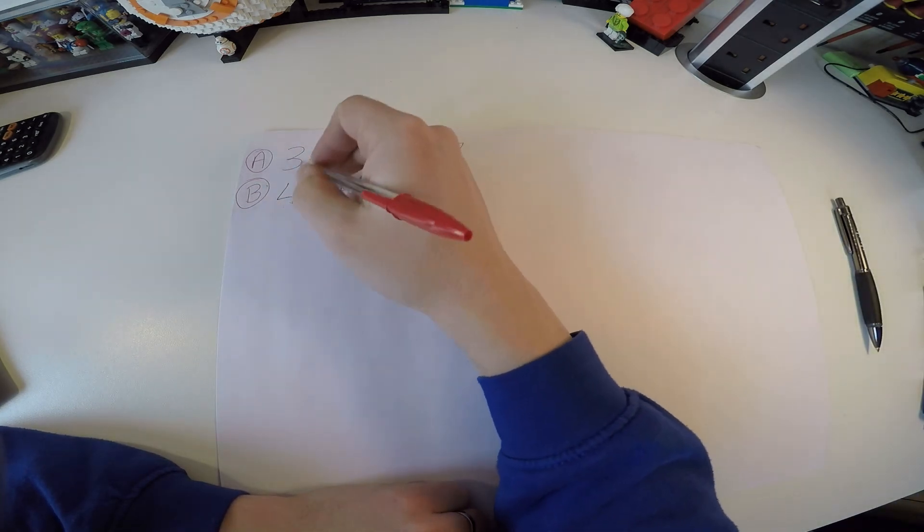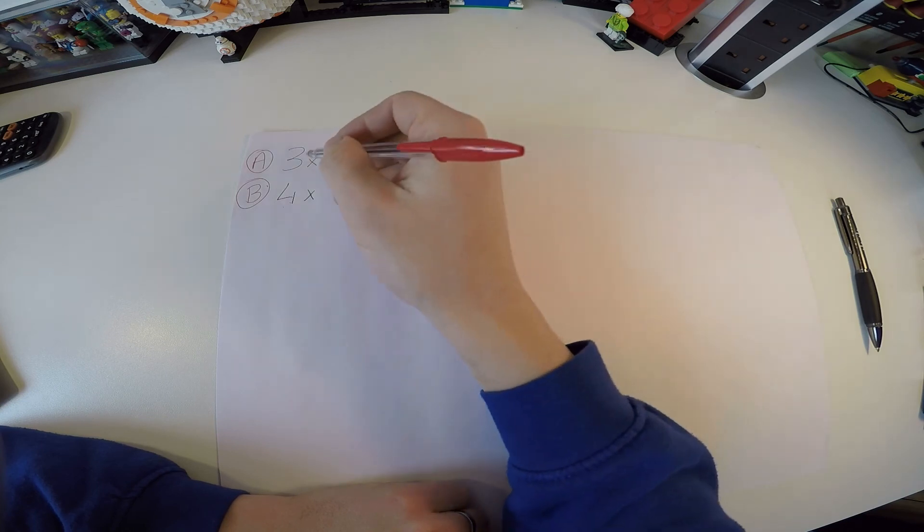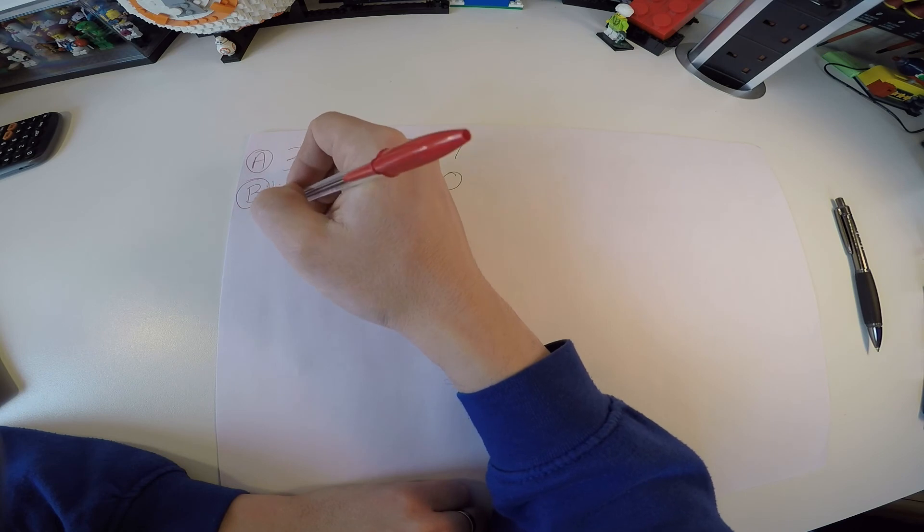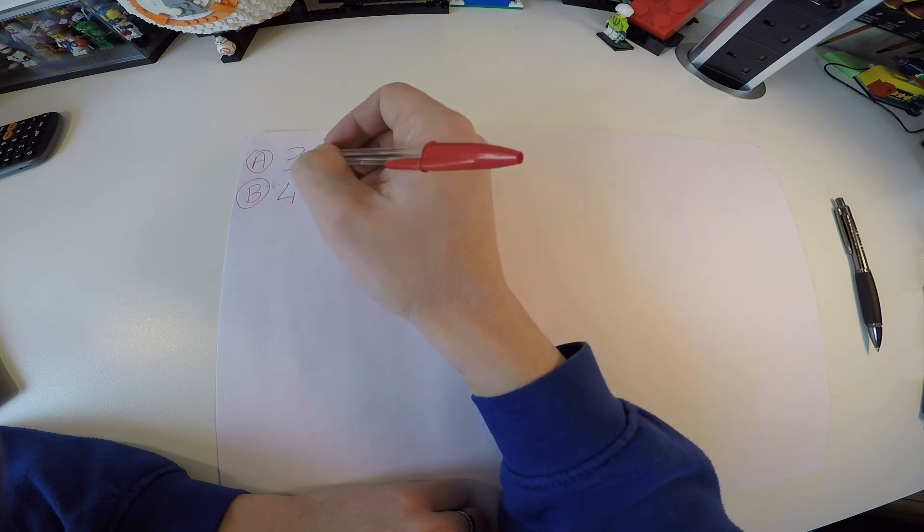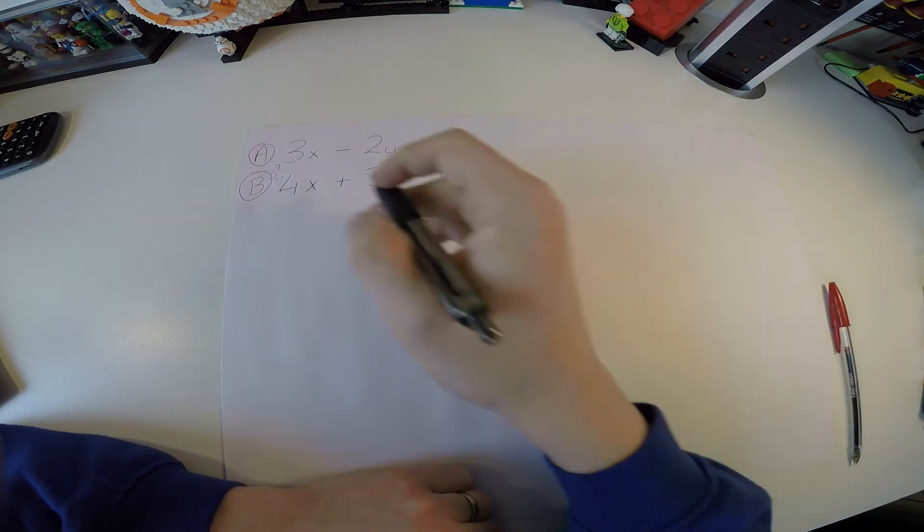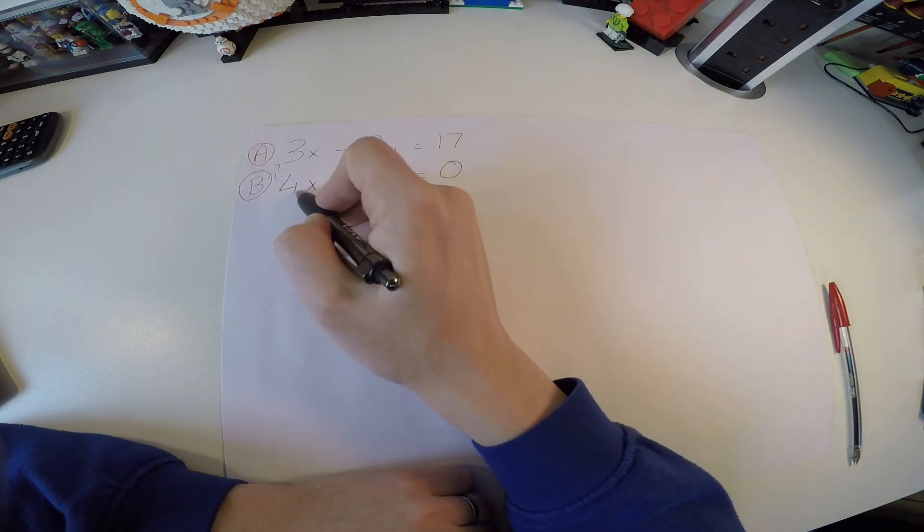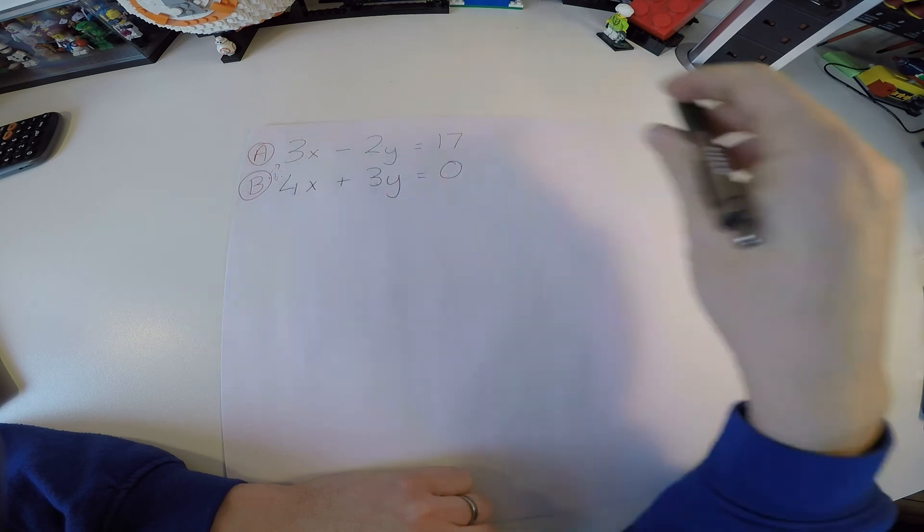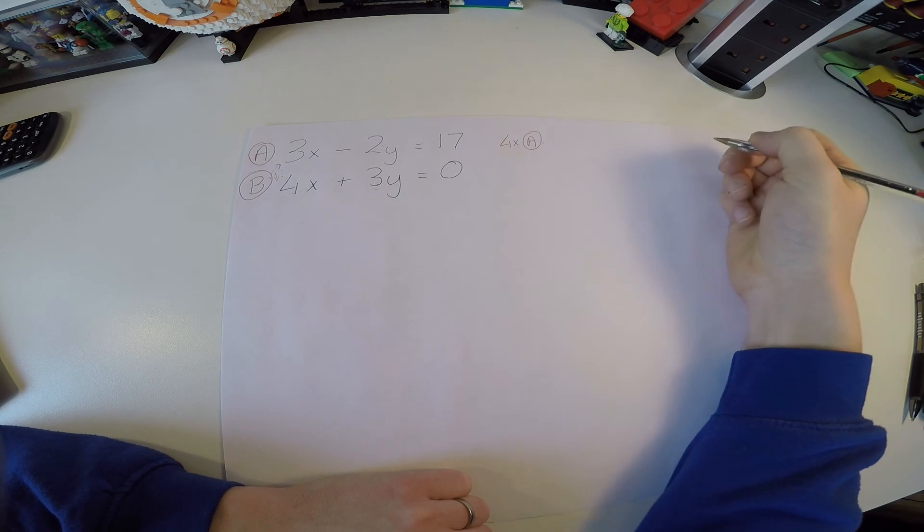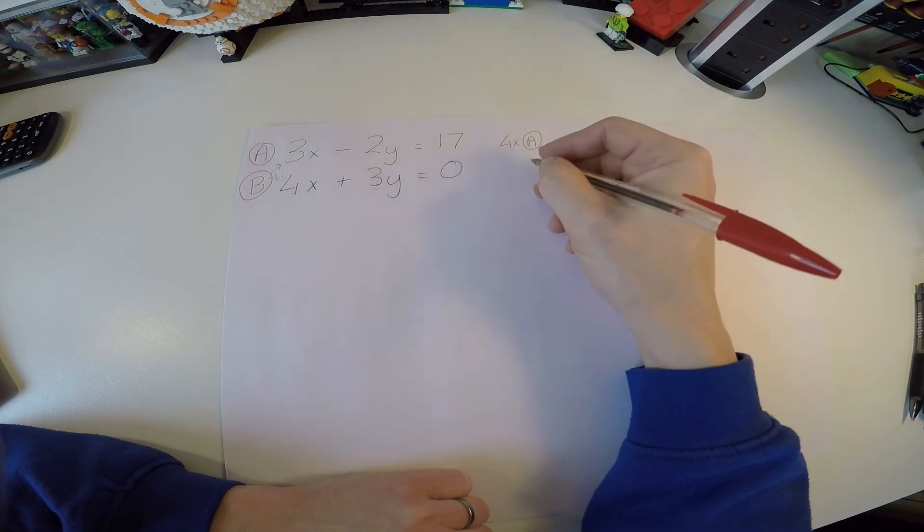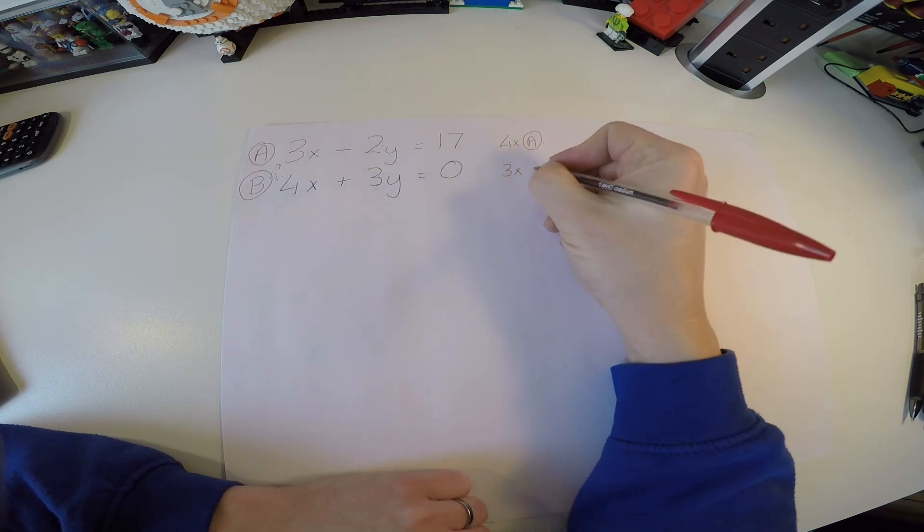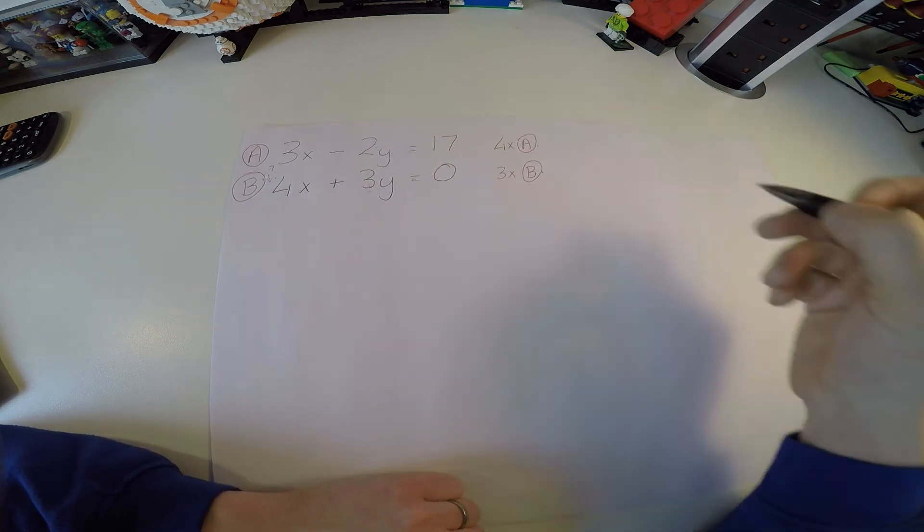I'm going to pick the x terms here. I'm going to multiply a by whatever the coefficient is with b. And I'm going to multiply b by whatever the coefficient is with a. What do I mean by that? Well, the coefficient with x and b is 4. I'm going to multiply a by that. I'm going to say 4 times a. And then I'm going to multiply b by the coefficient with a, which is 3 times b. So I have to multiply both equations at the same time here.